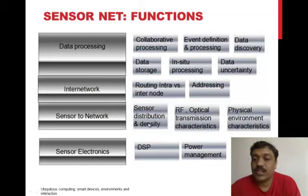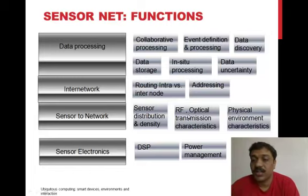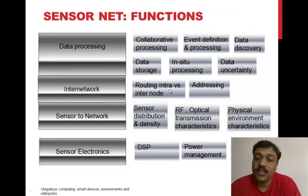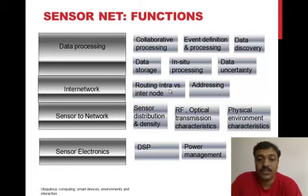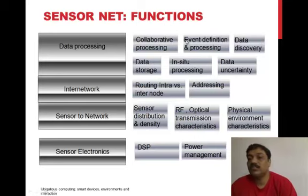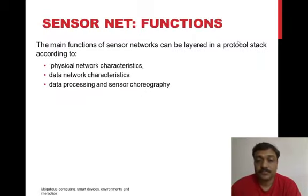The sensor-to-network interface handles sensor distribution and density, radio frequency environment, optical transmission characteristics, and physical environment characteristics. The internetwork layer is responsible for routing infrastructure, internet connectivity, and addressing of sensors in the network. The data processing layer takes care of how data is generated and stored, handling event definition, processing, collaborative processing, and data discovery.